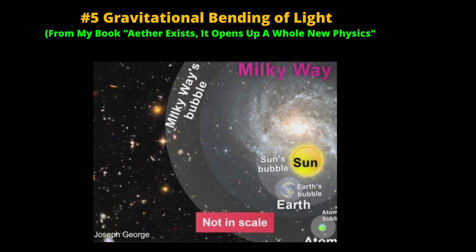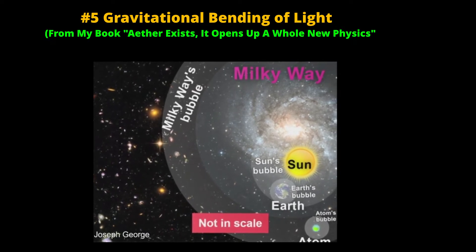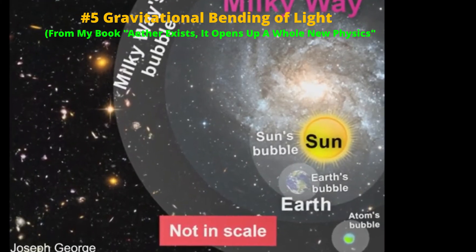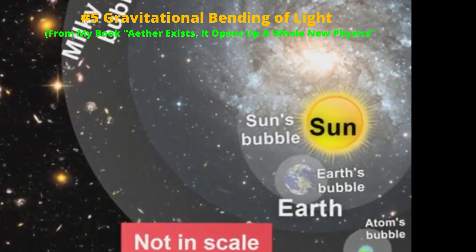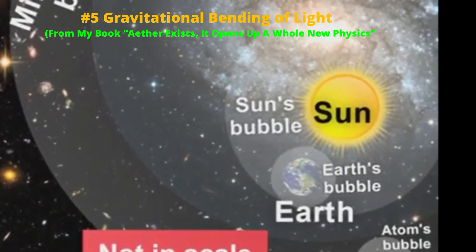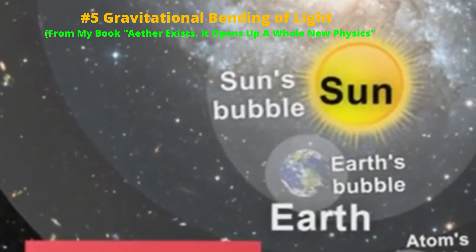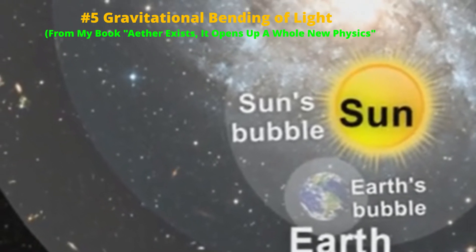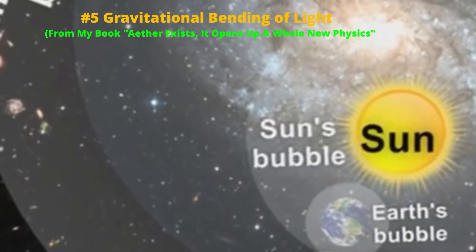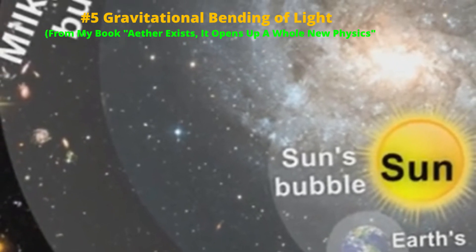There is an ether bubble around the Earth, an ether bubble around the Sun, and an ether bubble around the center of the galaxy. Earth's bubble sits inside the Sun's bubble, and the Sun's bubble sits inside the giant bubble created by the galactic center. In other words, bubbles of planets sit inside bubbles of stars, and bubbles of stars are inside bubbles of the centers of galaxies.